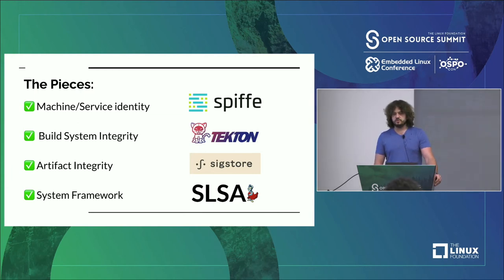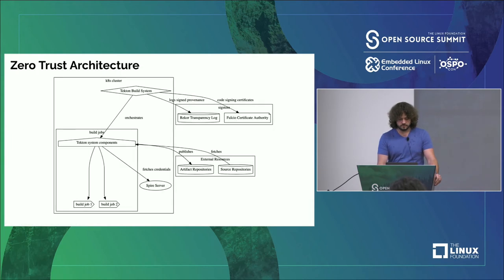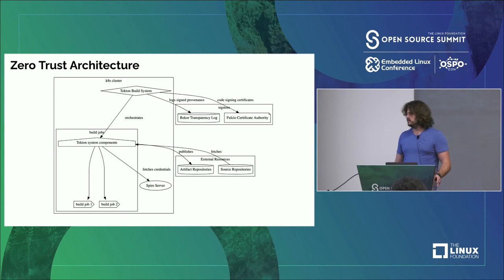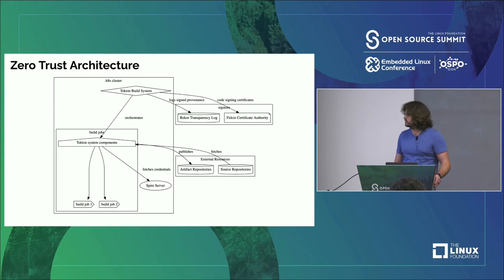The SLSA framework shows how to put all this together and evaluate how far along you are while building your zero trust supply chain architecture. The full system has Tekton running inside a Kubernetes cluster, with build jobs scheduled on VMs. Those VMs are monitored when they spin up to get TPM attestations and prove they're healthy before credentials are issued. This is a multi-tenant system, so each build gets its own set of credentials. All of that gets published into source repositories, artifact repositories, and into the Sigstore transparency logs.